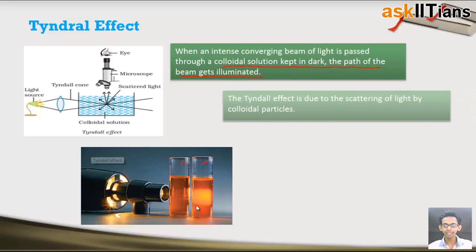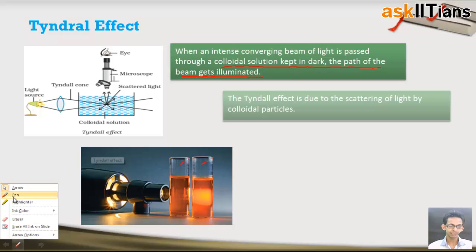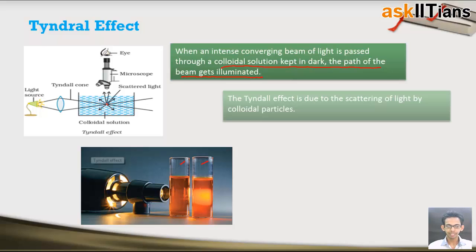Now why does it happen? This happens because the colloidal particles scatter the beam of light into different directions, because of which the path of light gets visible. Just see this diagram — light is coming, it collides with the colloidal particle, and that colloidal particle scatters the light in different directions, because of which the path is visible.